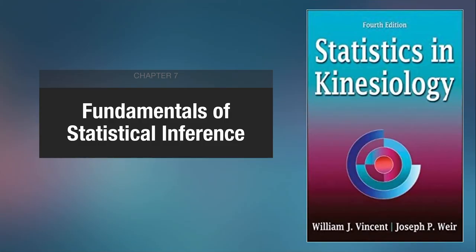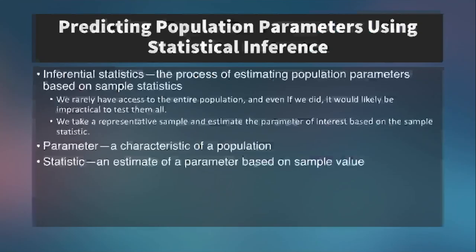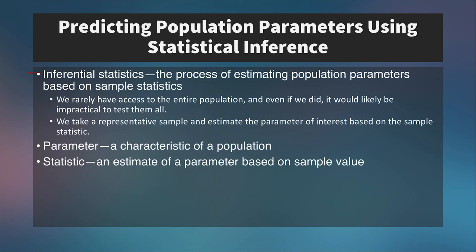This information comes from chapter 7 of the textbook, Statistics in Kinesiology by Vincent and Ware. We've already encountered the idea that we most likely will never be able to measure any aspect of the entire population. Instead, we have to take a sample — usually a random sample — from the population, and then infer characteristics of that sample to the broader population. This is what is called inferential statistics: the process of estimating population parameters based on sample statistics.